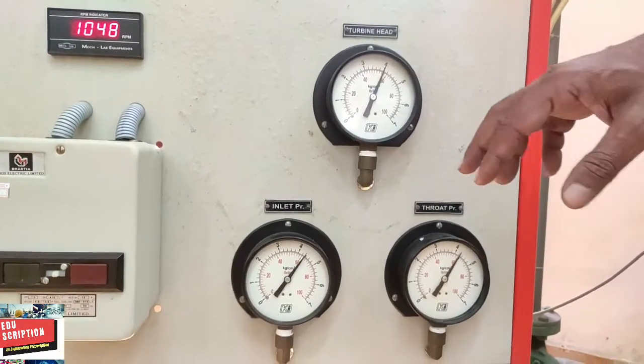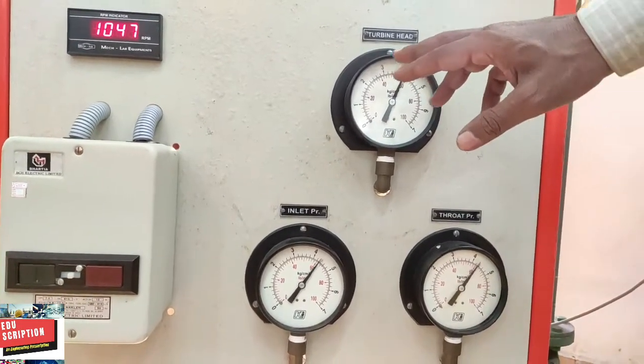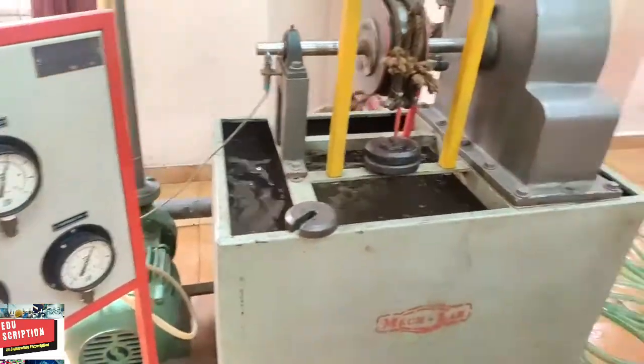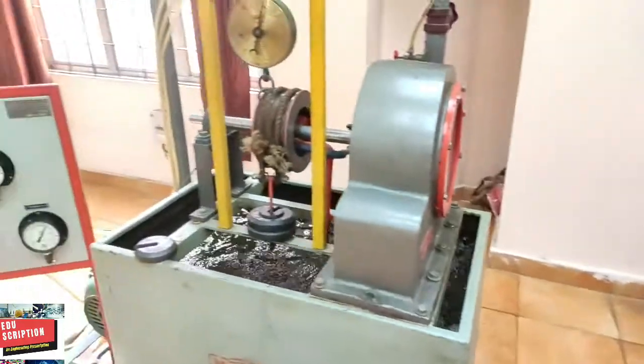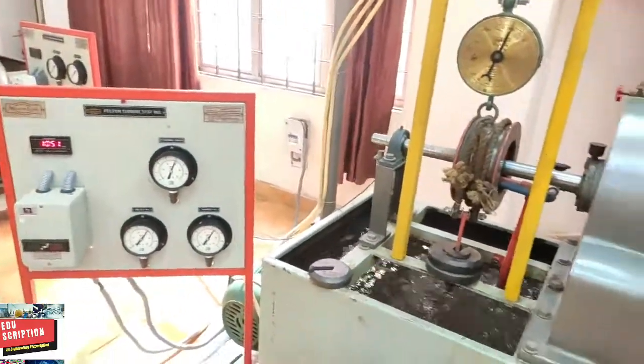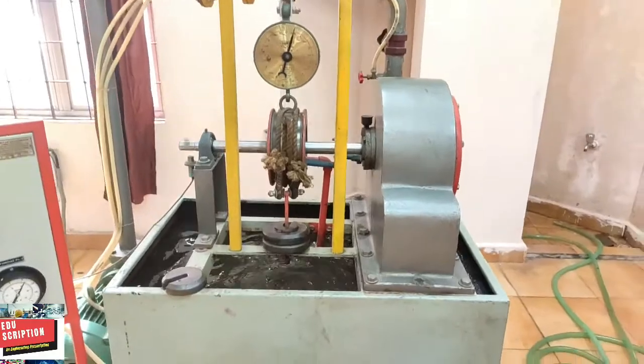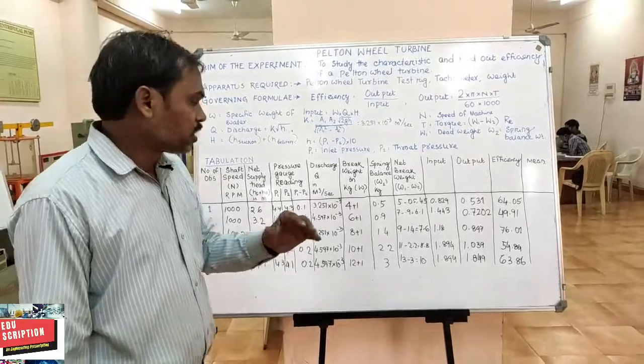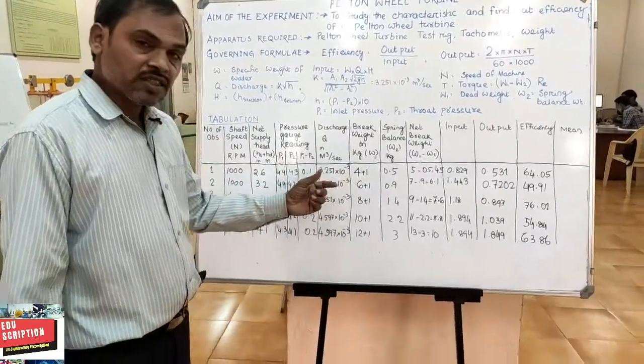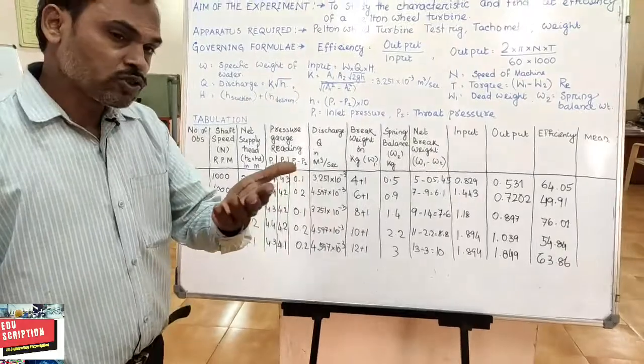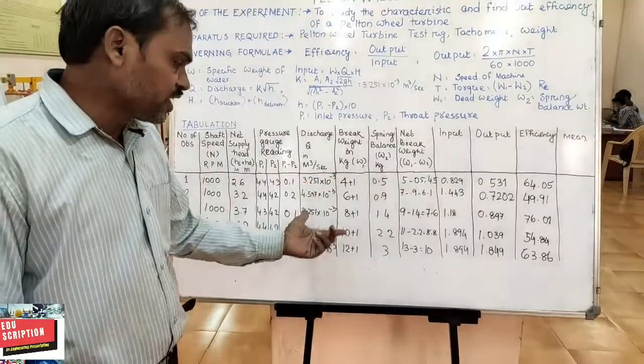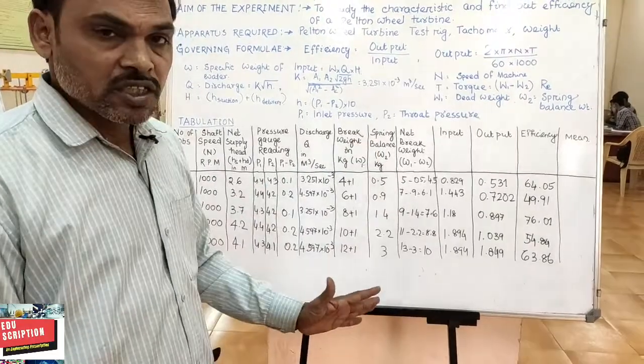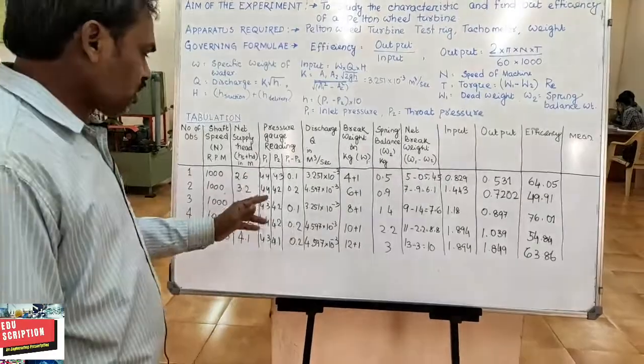After that we go for the second observation. Next we go for the consecutive readings. In the next part, we go similarly. We increase the weight. Suppose initially we give here 4 kg, then 6 kg, then 8 kg, then 10 kg, 12 kg like this, and find out the spring balance reading and also find out the pressure individually.